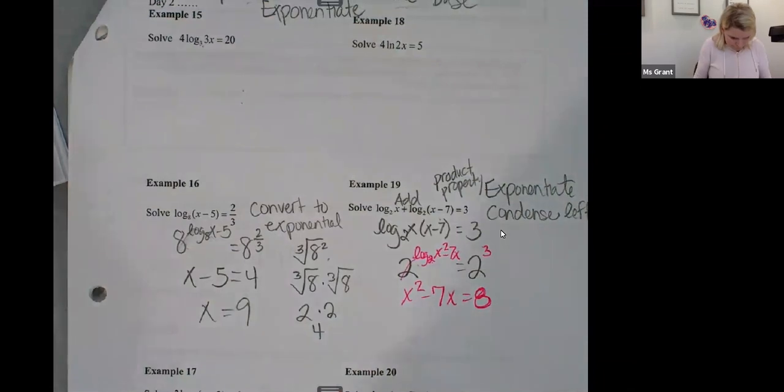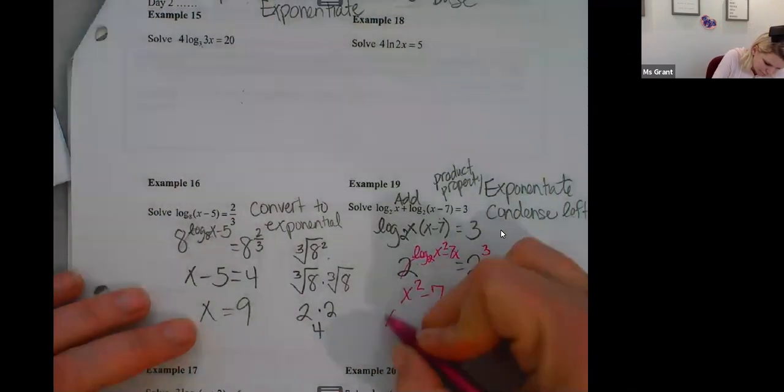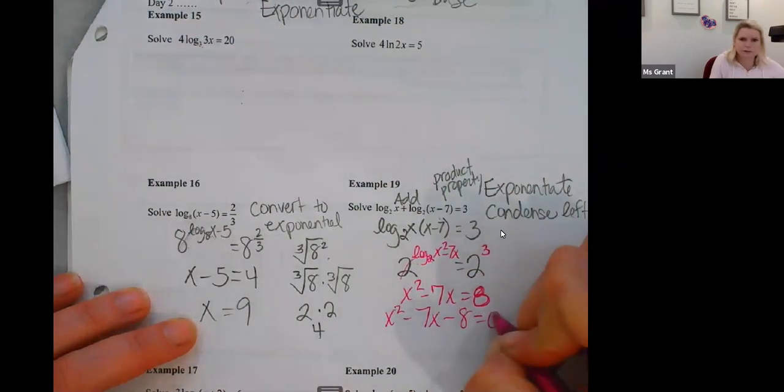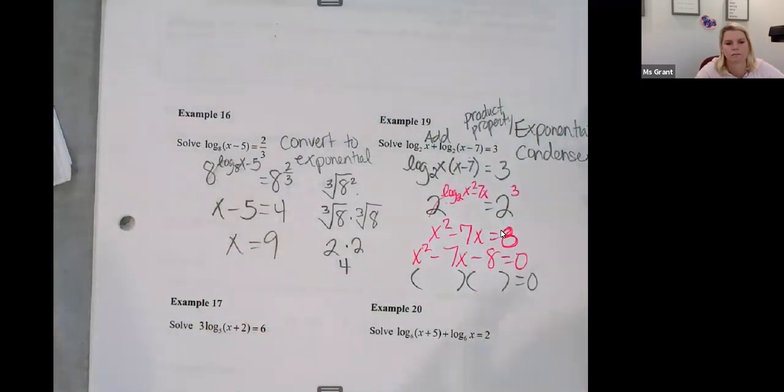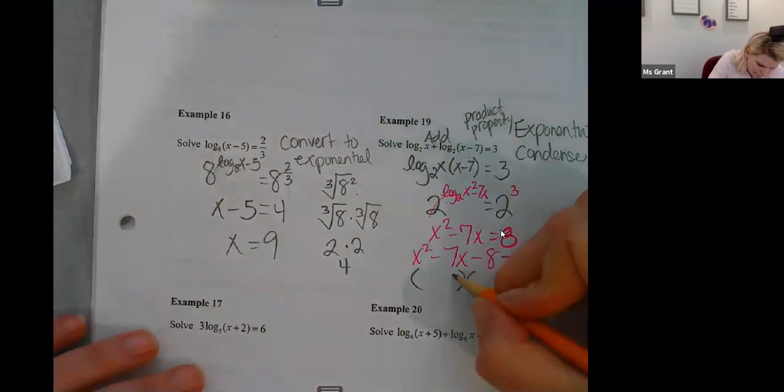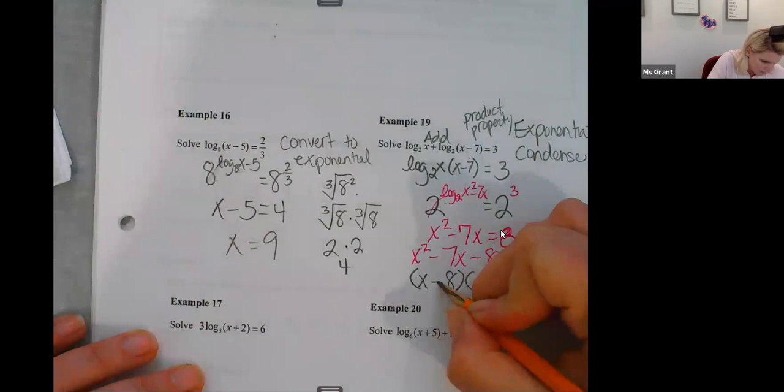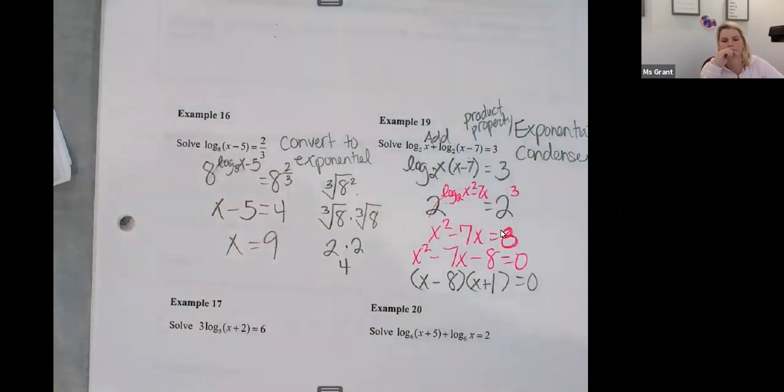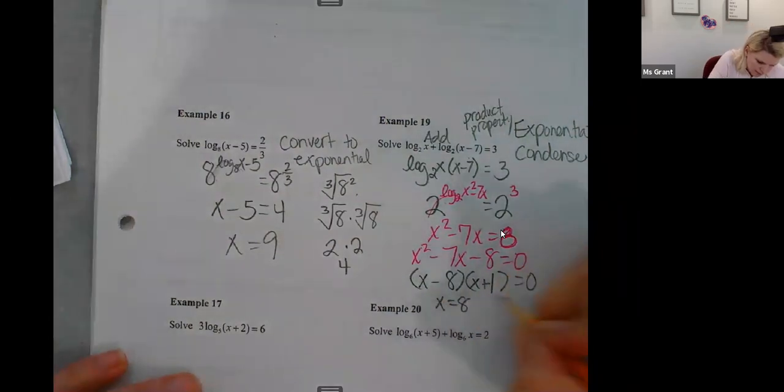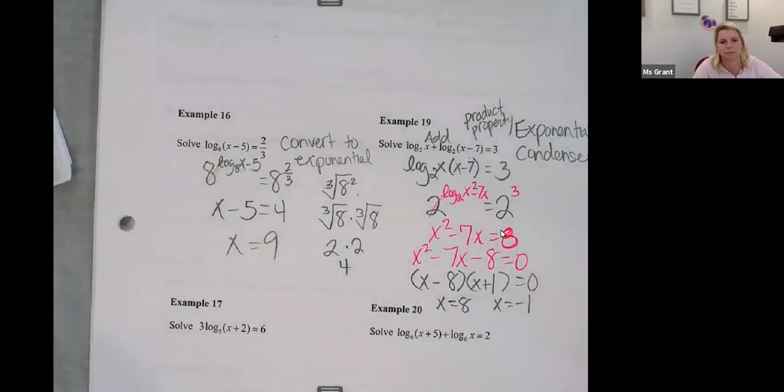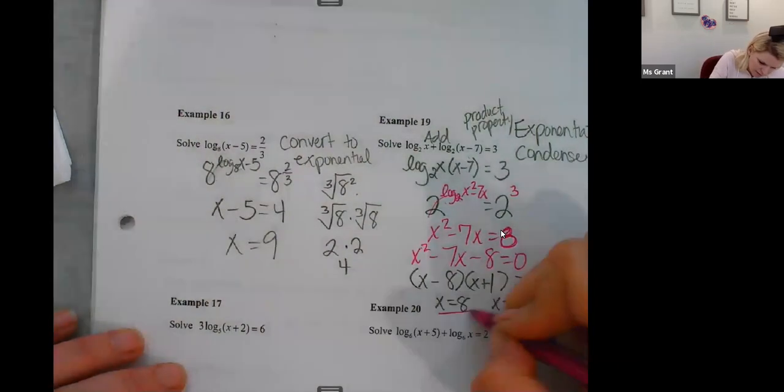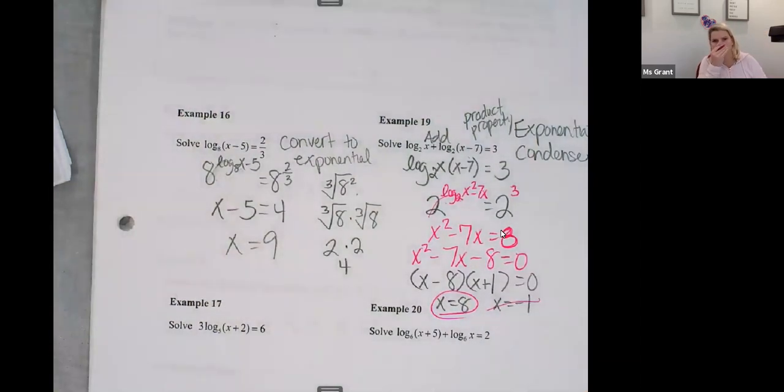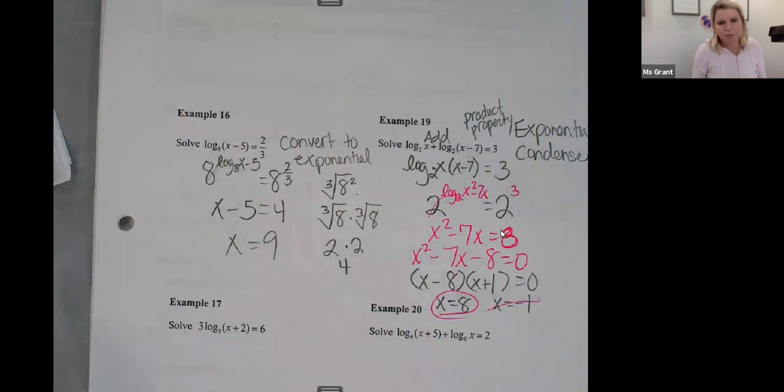Okay. Solve. Set everything equal to zero. Eight and one, right? X minus eight. X plus one. X equals eight. X equals negative one. And by the way, I only am going to use positive answers. When I have two choices. I can't, you have a negative in there with a logarithm. So my positive answer eight is going to be the real.